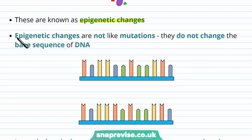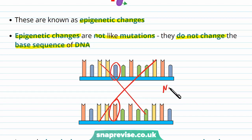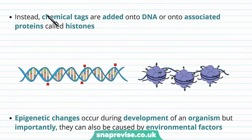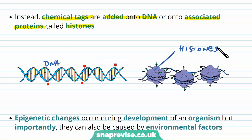Epigenetic changes are not the same as mutations. They do not change the base sequence of the DNA. In a mutation, what we see is a change in the nucleotide sequence, but this is not happening in this case. Instead, it is the addition of chemical tags added to the DNA, or onto associated proteins which we call histones. DNA doesn't exist on its own — it interacts with proteins known as histone proteins, which help to pack up the DNA. The DNA winds around the proteins, and we can have these chemical tags added to the DNA or to those proteins.